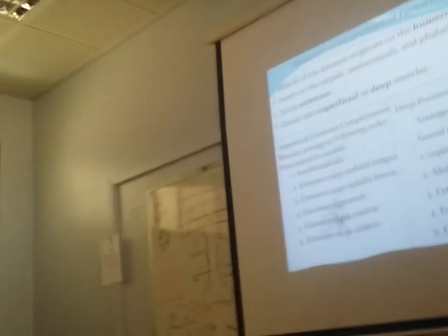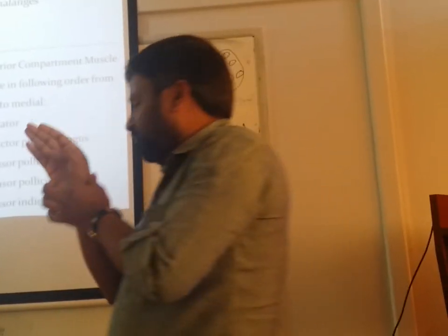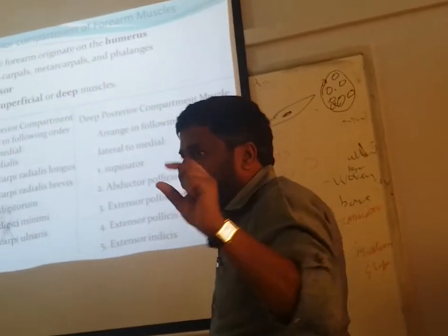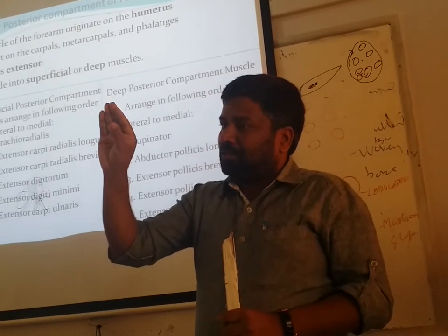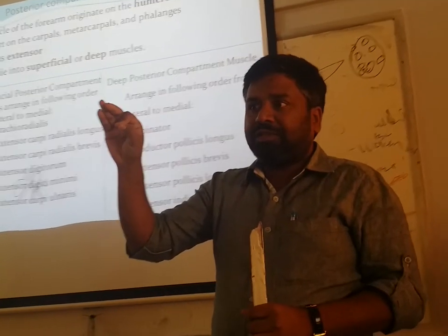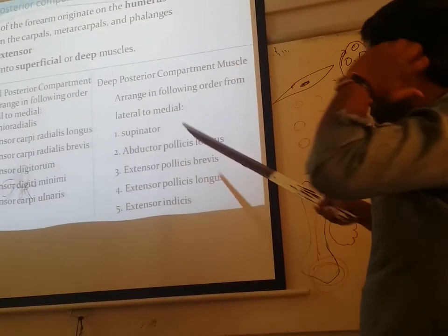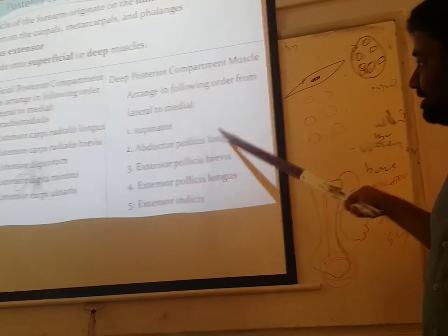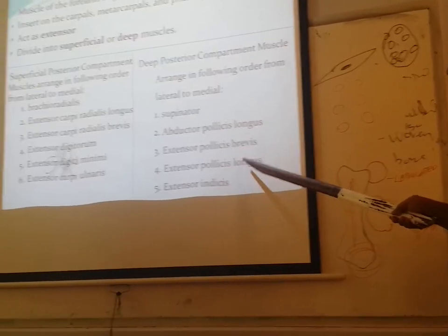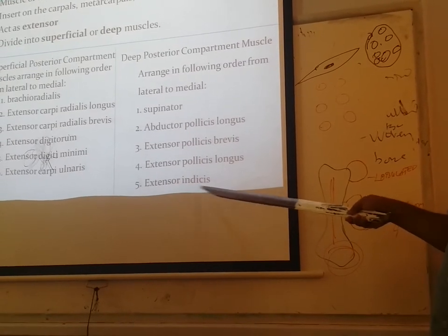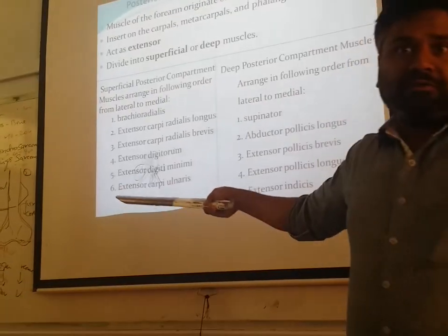We humans are considered an advanced group in the animal kingdom because of our skills and thinking abilities. The evolution of the brain and the position of the thumb have made humans superior to all other animals. That is why there are so many muscles which move the thumb, helping with our skillful movements. The five deep extensor muscles are: supinator, abductor pollicis longus, extensor pollicis brevis, extensor pollicis longus and extensor indicis.